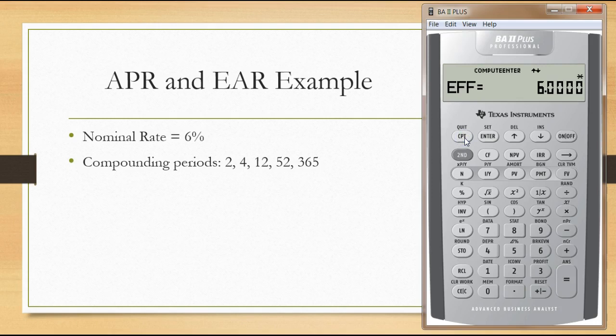When we change the compounding periods per year to two - meaning interest compounds every six months - press Enter, then go back to the effective rate and compute. You can see the effective rate with a 6 percent nominal rate compounded twice per year is slightly higher at 6.09 percent.